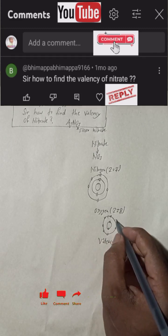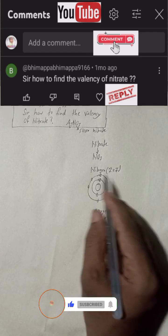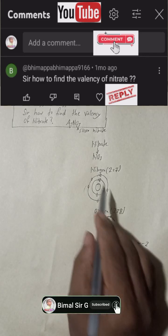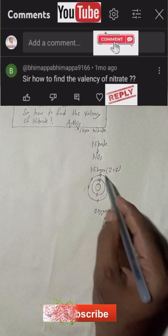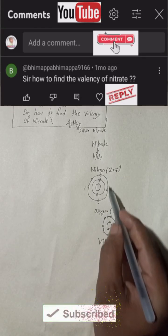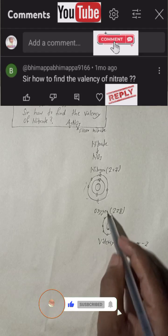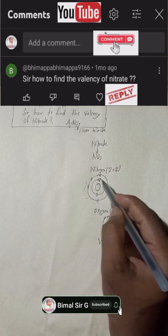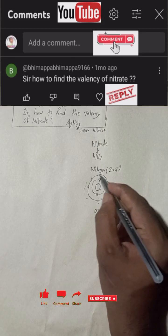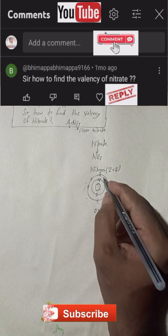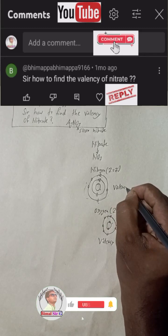Since oxygen tries to gain electrons, its valency is minus 2. Now for nitrogen — nitrogen has 5 electrons in the outer shell. Oxygen pulls more strongly, so nitrogen will lose those electrons. Because nitrogen loses electrons, its valency is plus 5 — one, two, three, four, five.